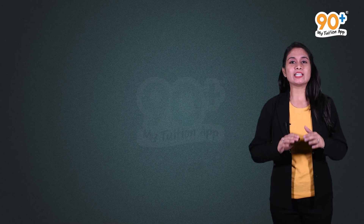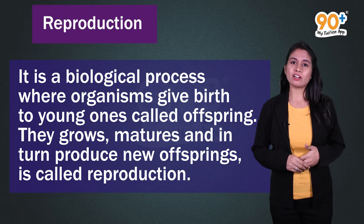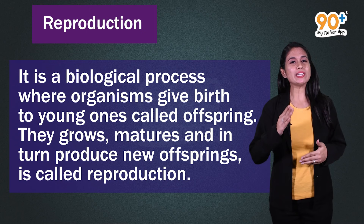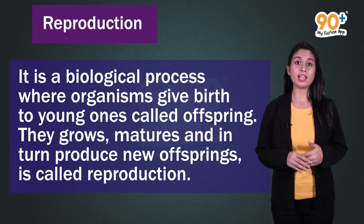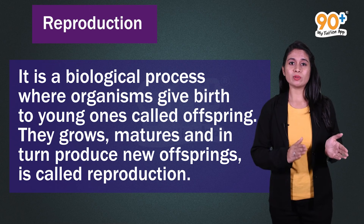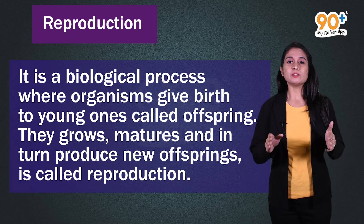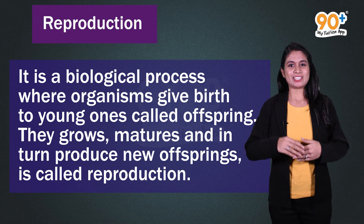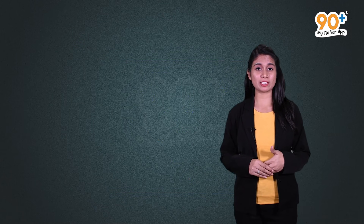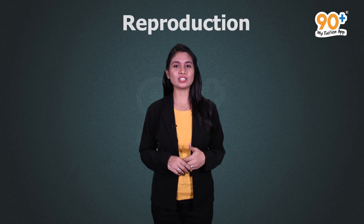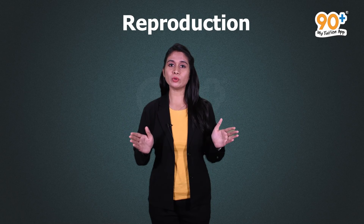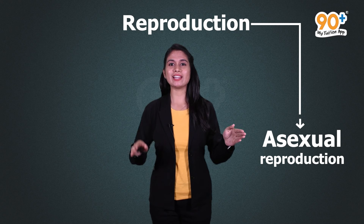Reproduction is a biological process where an organism gives birth to its young ones, called offspring. This offspring grows, matures, and in turn produces new offspring. This process ensures the continuity of the species generation after generation. Reproduction is of two types: asexual reproduction and sexual reproduction.